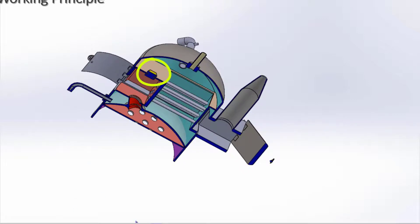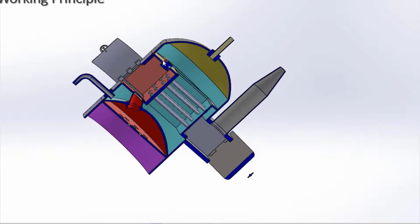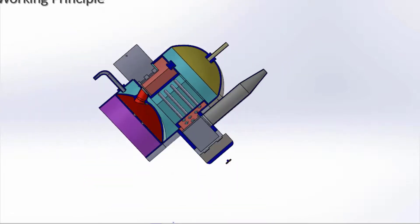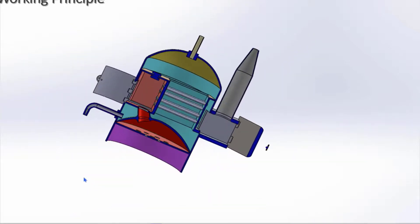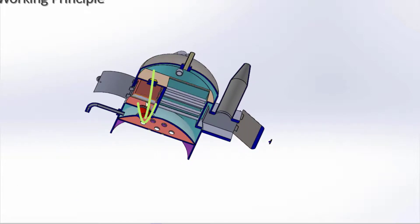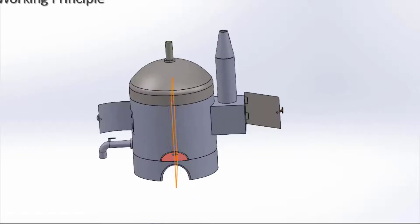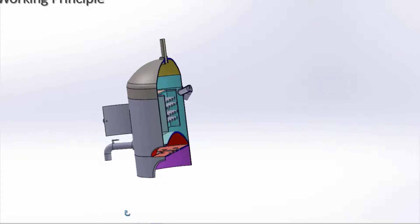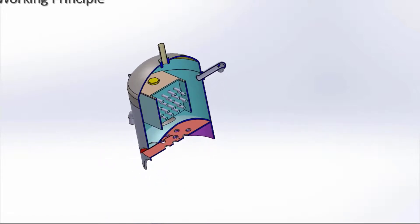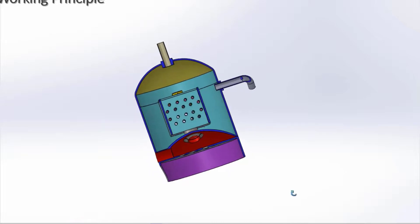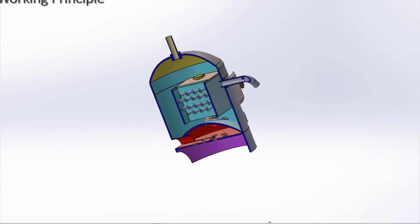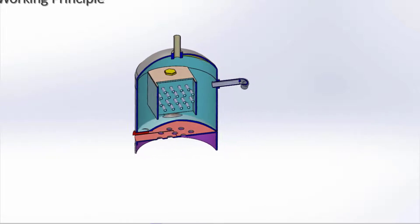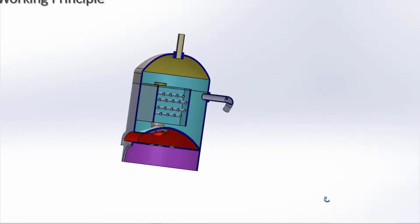This is the fusible plug. If the water level goes down, the plug is melted and water enters through this hole to the furnace to stop the fire. Now you can see the cut section at the vertical side plane. Look at the multiple fire tubes surrounded by water. Water receives heat from the top of the furnace and also from the fire tubes.